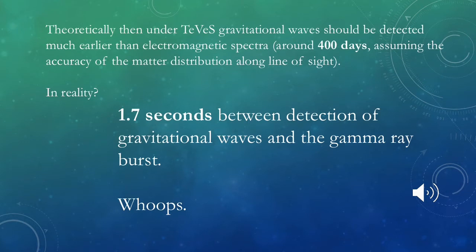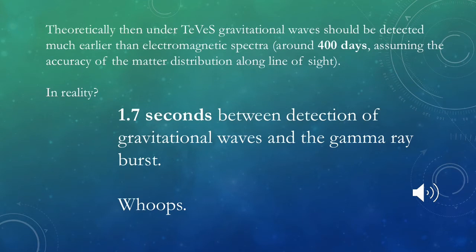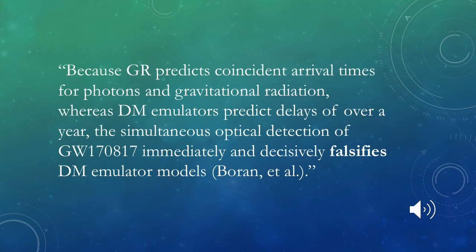Not surprisingly, this does not bode well for TeVeS. Barron et al. concluded that because general relativity predicts coincident arrival times for photons and gravitational radiation, whereas dark matter emulators like TeVeS predict delays of over a year, the simultaneous optical detection from this event immediately and decisively falsifies dark matter emulator models like TeVeS. This was picked up in popular science magazines with headlines like 'troubled times for alternatives to Einstein's theory of gravity.'